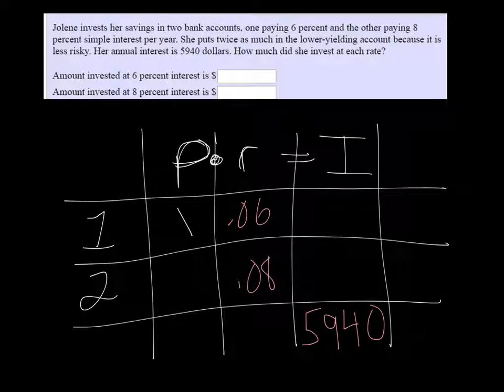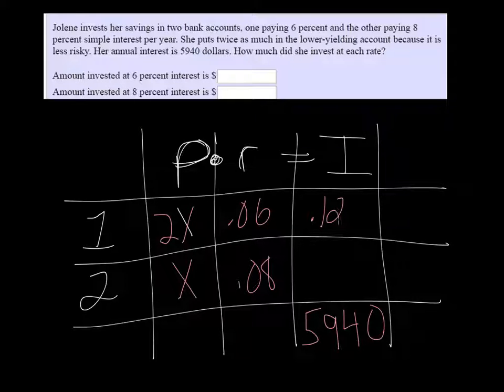So we don't know how much she put in one of them, but in the lower one she put twice as much. So let's say the higher interest one was X, then the lower interest one would be 2X. So multiplying those, I would get 0.12X, because 2X times 0.06 is 0.12X. That would be the interest. And the interest for the other one would be 0.08X.